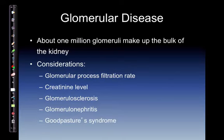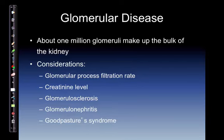Glomerular disease: about 1 million glomeruli make up the bulk of the kidney. The glomerular filtration rate, or GFR, is a measure of the kidney's health. Creatinine level provides a crude measurement of the GFR, as creatinine is constantly cleared. Glomerular sclerosis is scarring or hardening of arteries within the glomeruli. Glomerular nephritis is inflammation of the blood vessels within the glomerular process. Goodpasture syndrome is an autoimmune disease which attacks the kidneys and causes blood to pass through the glomerular process into the urine, causing hematuria.